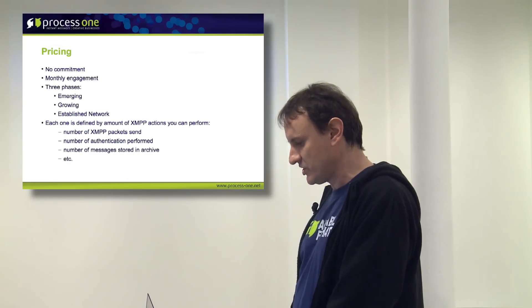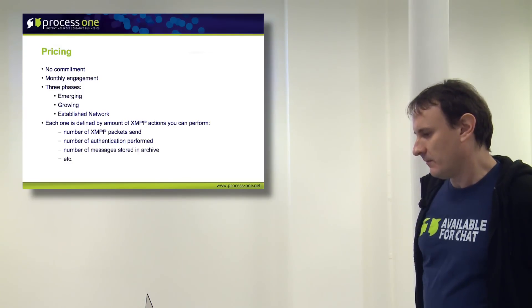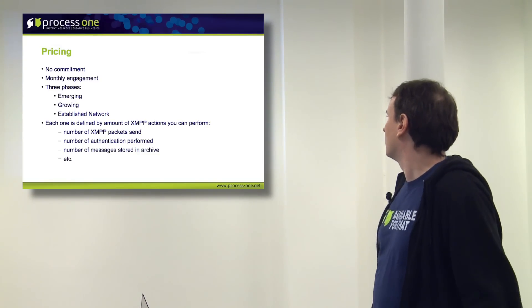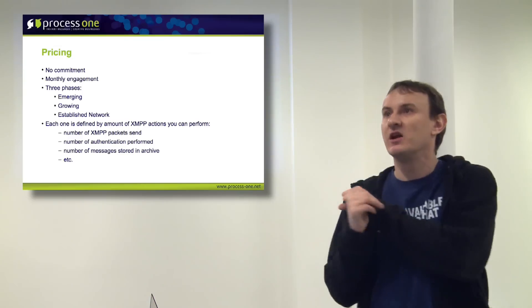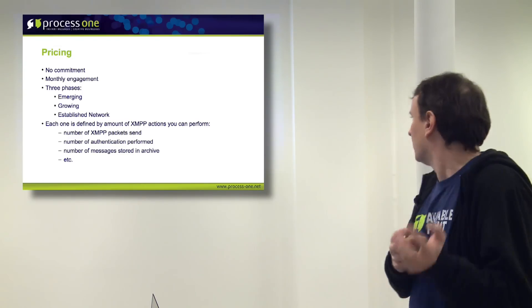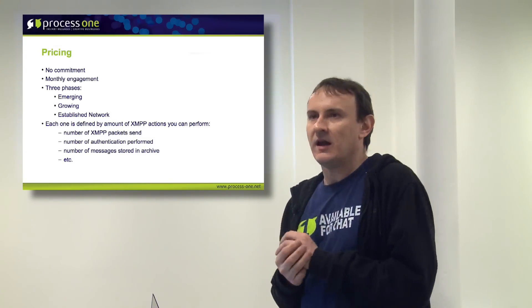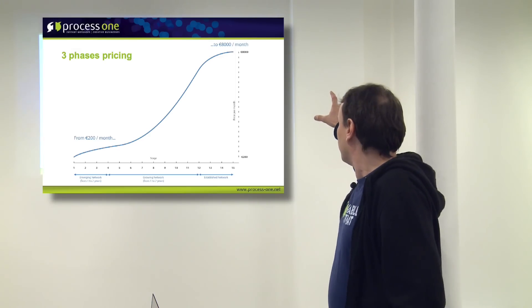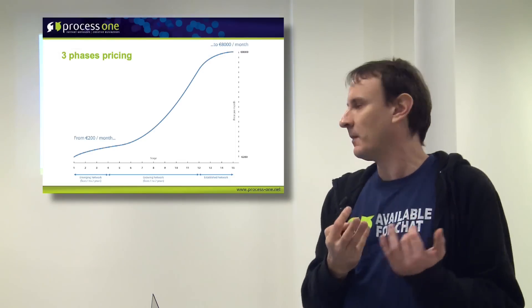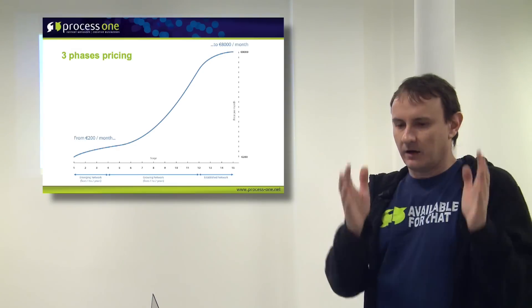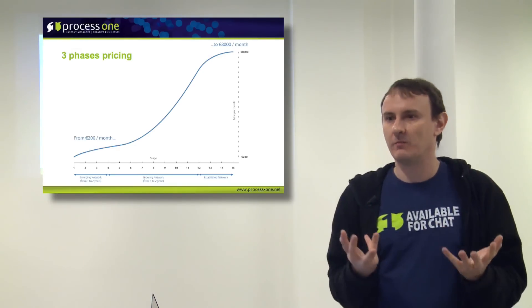How do we decide which stage you are in? We are monitoring the usage of the platform. Basically, each activity action that you perform — it can be a notification, sending a packet, subscribing to a pub/sub, storing a message in the archive, and so on — is accounted in the platform. Depending on the usage you have, we will decide which stage you are in. At some point, if your usage is increasing, we will propose you go up one stage in the next month. Basically, you will pay exactly for how you are using the platform, month to month.